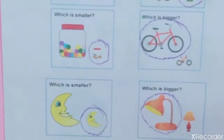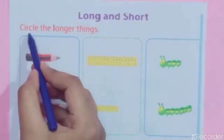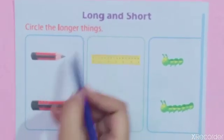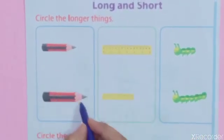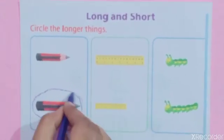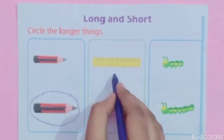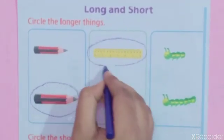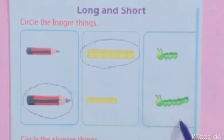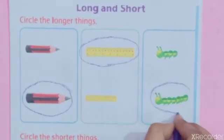Now children, we do the next worksheet. Read — circle the longer things. See here, which one is longer? This one is longer. In this picture, which one is longer? This one is longer.